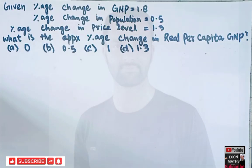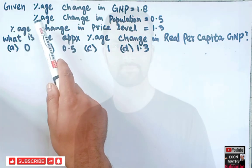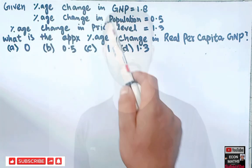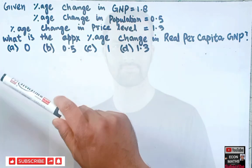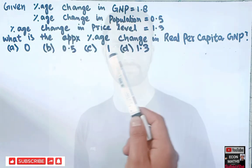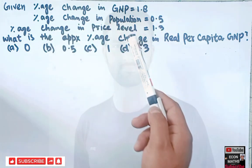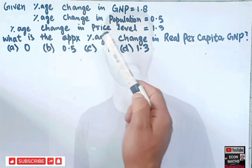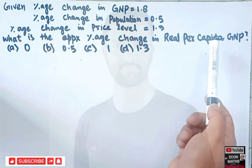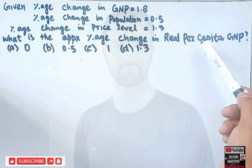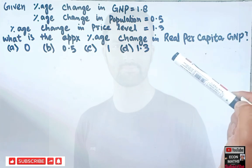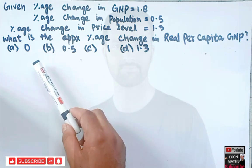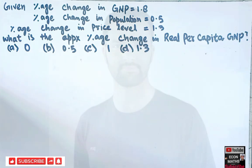In this video we will try to solve a problem that was asked by a friend on YouTube. Given: percentage change in gross national product is 1.8%, percentage change in population is 0.5%, percentage change in price level is 1.3%. What is the approximate percentage change in real per capita GNP? The options are 0, 0.5, 1, and 1.3.